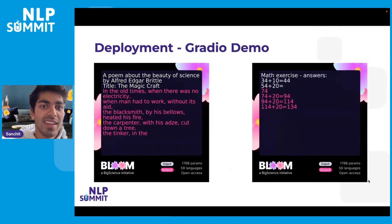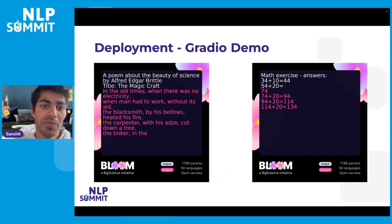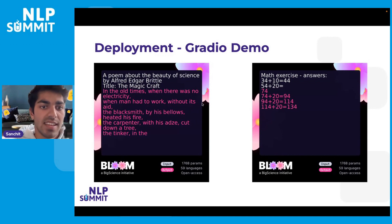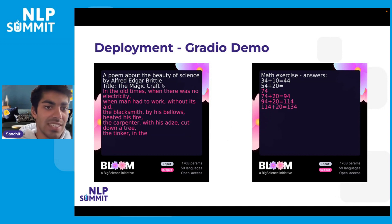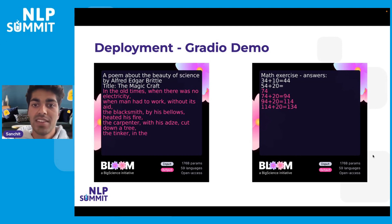Through this we were able to build very efficiently a nice-looking Gradio demo, where inputs shown in white were requested by the user and outputs in pink were returned by the model. We can see the true capacity of BLOOM — its creative aspect on the left, being able to create a poem in the style of Alfred Edgar Brittle based on just a title prompt alone, and also its computational abilities on the right, being able to complete a maths exercise given two addition prompts.